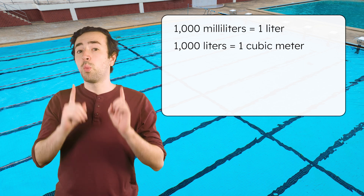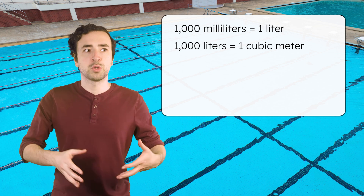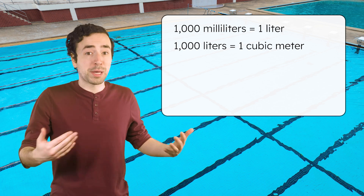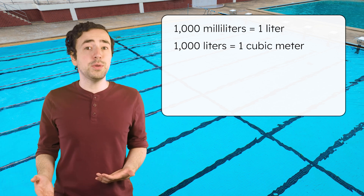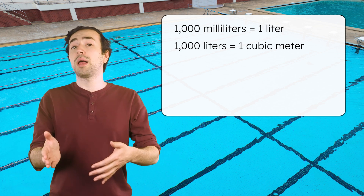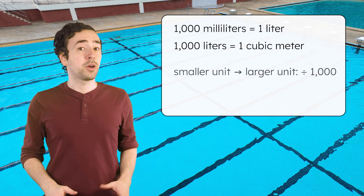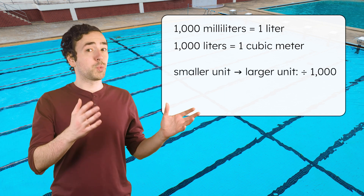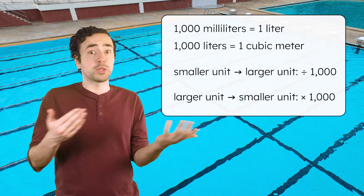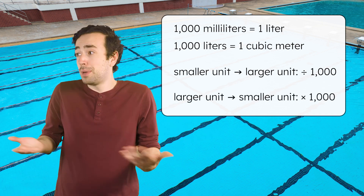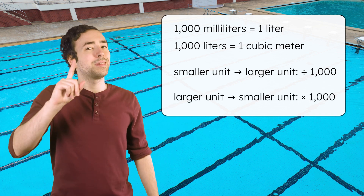Since there are 1,000 milliliters in one liter and 1,000 liters in one cubic meter, every time we convert between metric volume units, we'll multiply or divide by 1,000. Converting from a smaller unit to a larger one — divide by 1,000. Converting from a larger unit to a smaller one — multiply by 1,000. Time to put this pattern into practice.